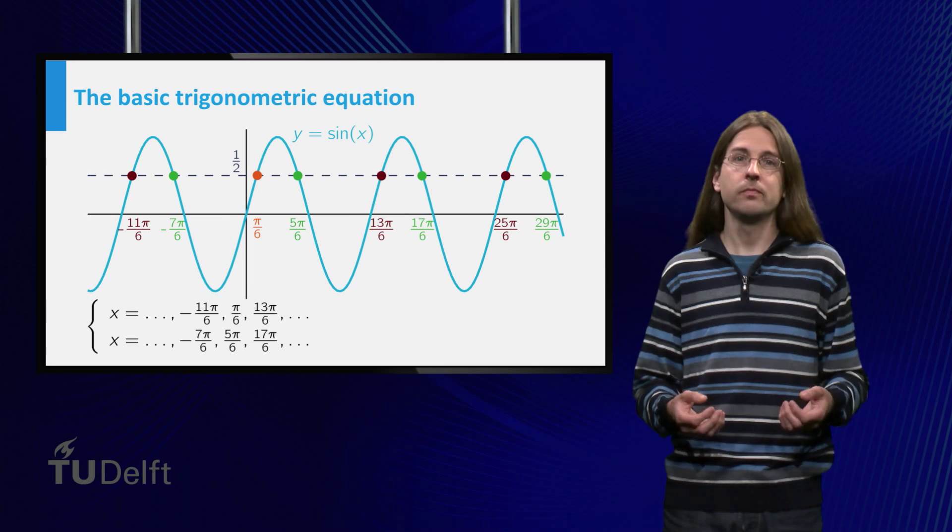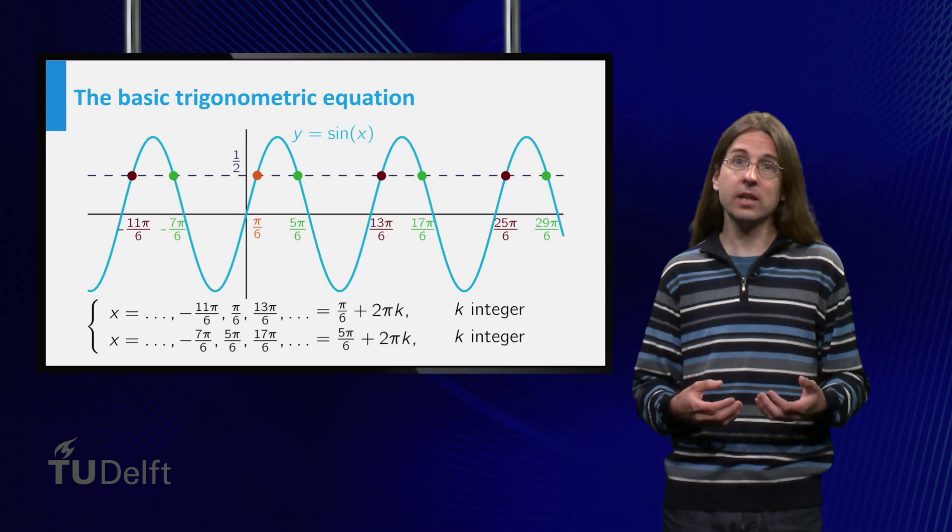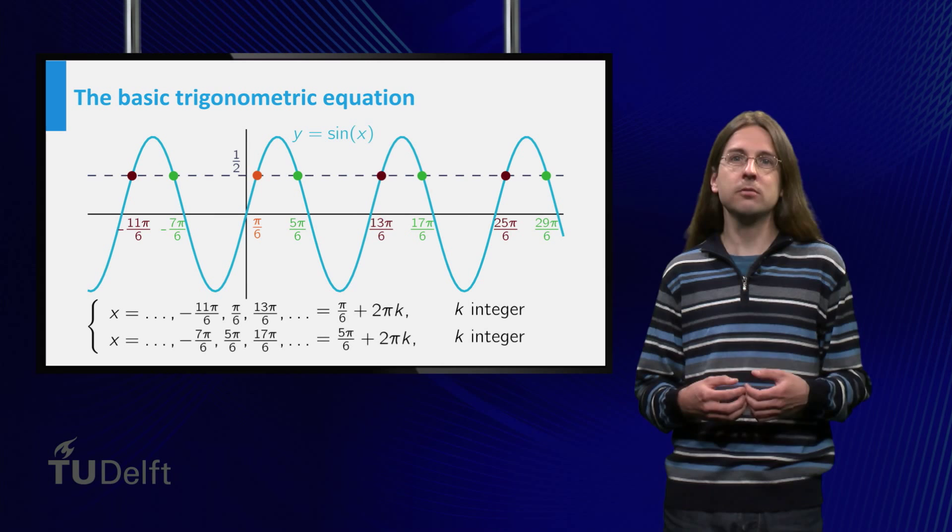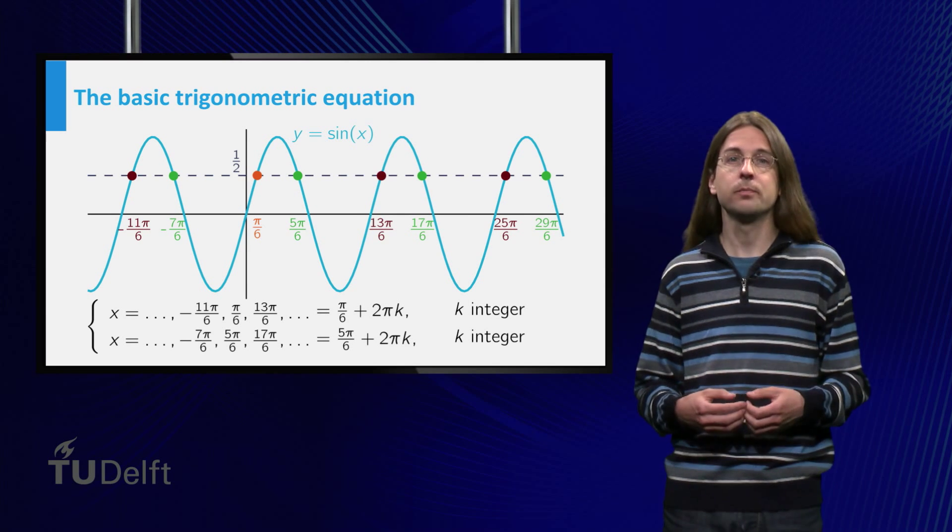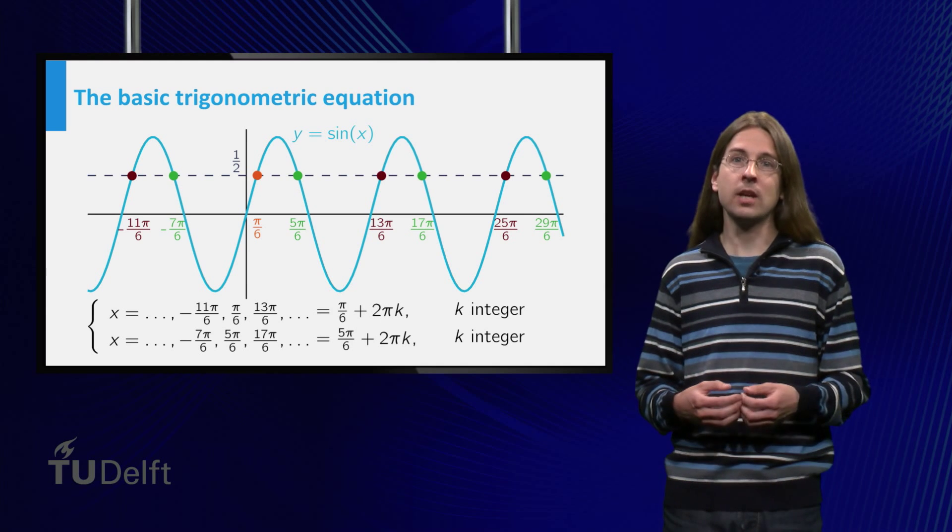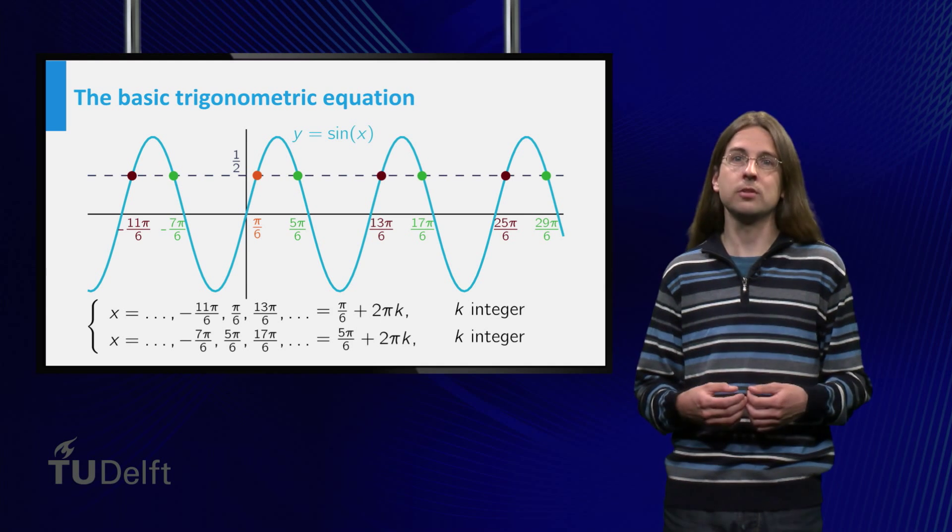For example, you can write x = π/6 + 2πk or x = 5π/6 + 2πk where k is an integer, either positive or negative. By plugging in all integer values of k you obtain all solutions of the equation.